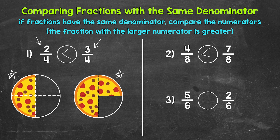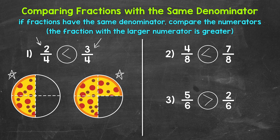Let's move on to number three, where we have five-sixths and two-sixths. Reading from left to right: five-sixths is greater than, less than, or equal to two-sixths. If we have the same sized whole divided into six equal pieces, which is greater — five out of the six total pieces, or two out of the six total pieces? We have the same denominator, so we just compare the numerators. Five is greater than two, so five-sixths is greater. Our symbol opens up towards five-sixths, and we read this as five-sixths is greater than two-sixths.